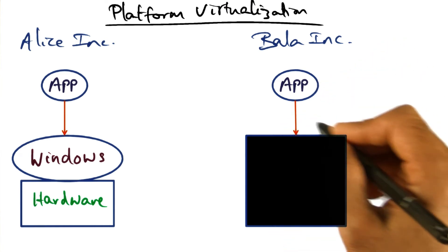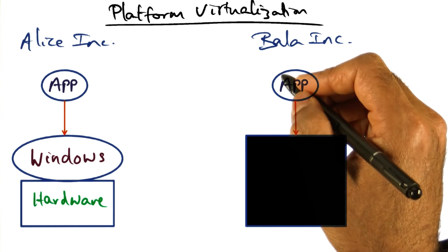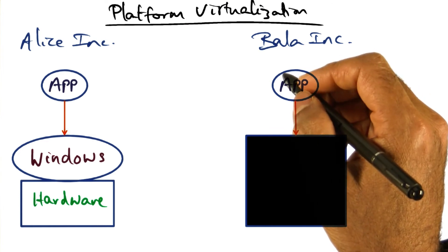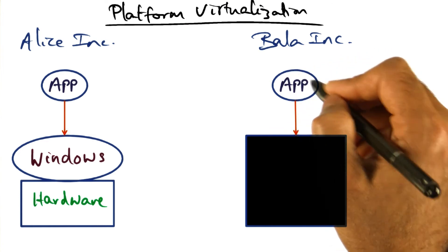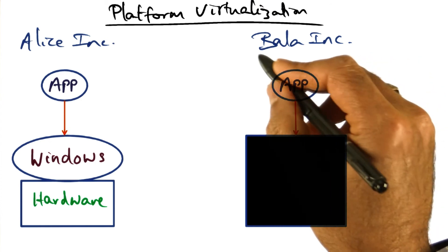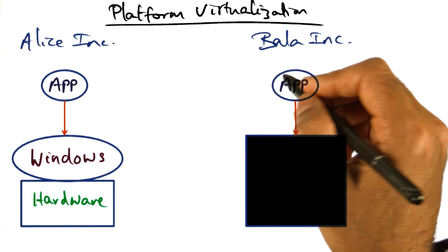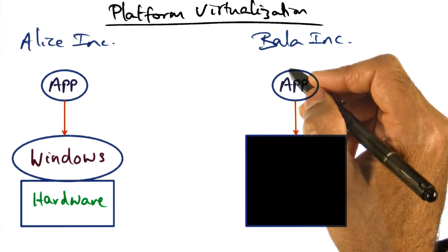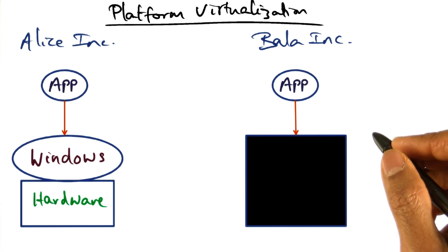In other words, as long as the platform affords the same capabilities and the same abstractions for running the applications that Bala Inc. wants, he's happy.